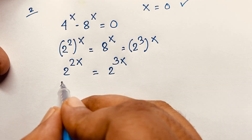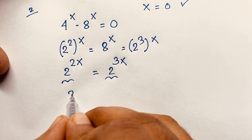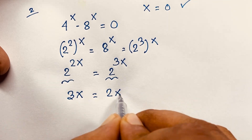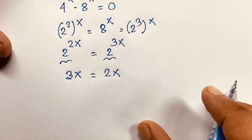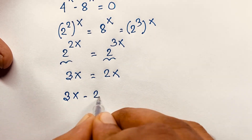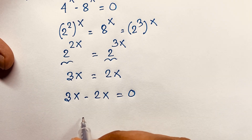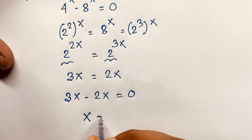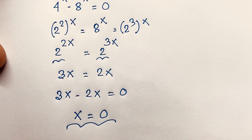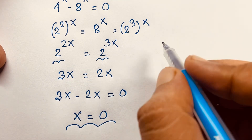Now the base is the same, so the exponents are equal, giving 3x is equal to 2x. If I move 2x to this side, it will be 3x minus 2x is equal to 0, so x is equal to 0. This is our final answer in this beautiful exponential math problem.